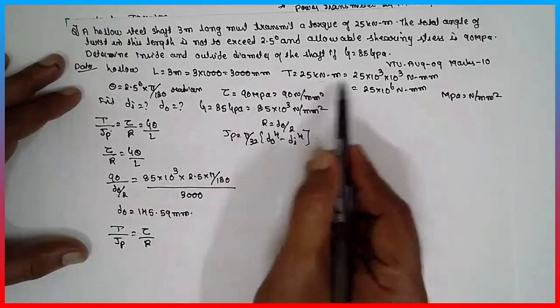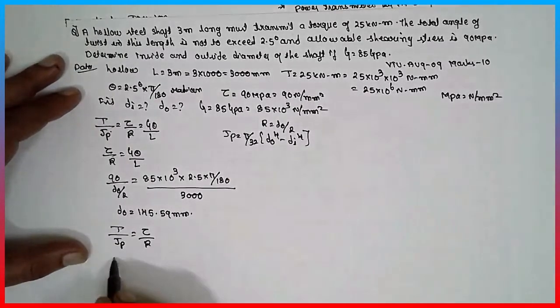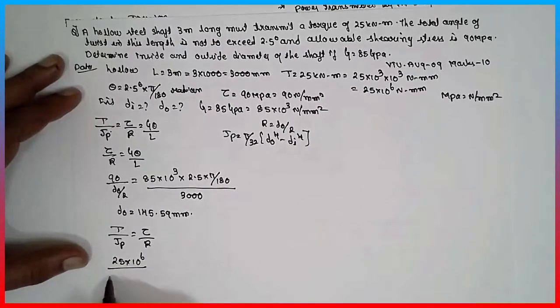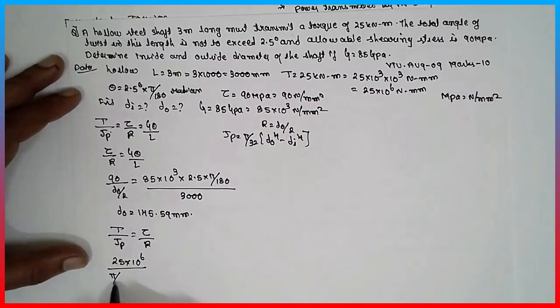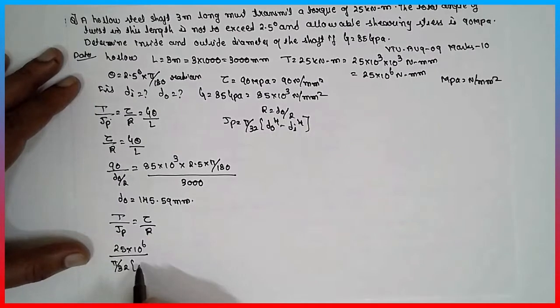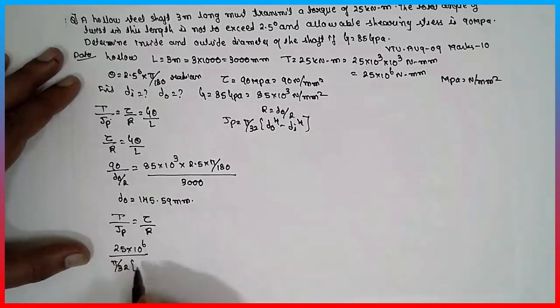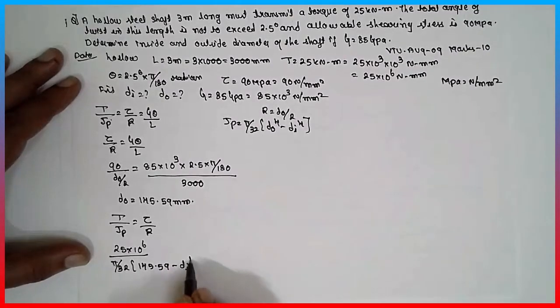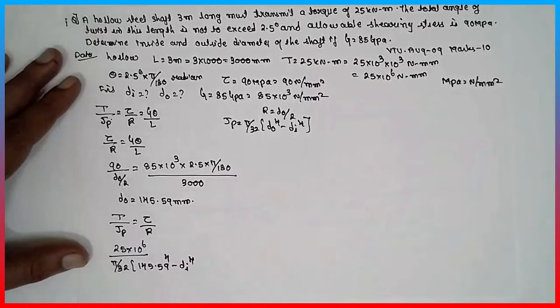Torque, this is the torque value, 25 into 10 raise to 6 divided by pi by 32. What is D naught? D naught is 145.59 to the 4th power minus D_i raise to 4.